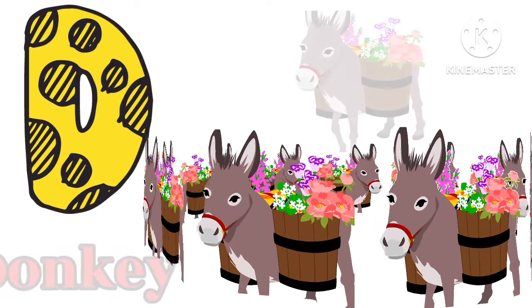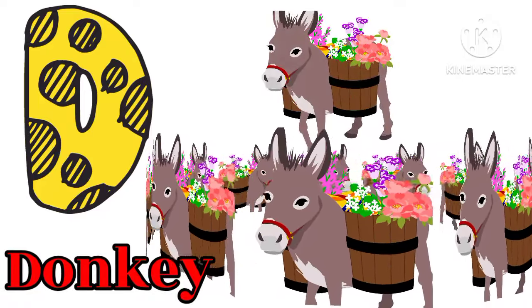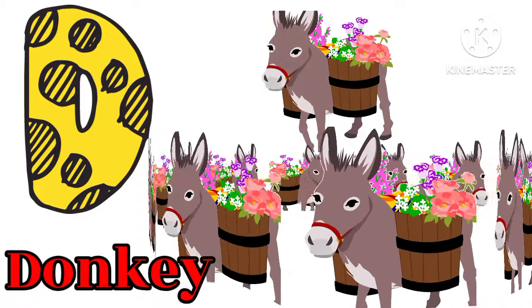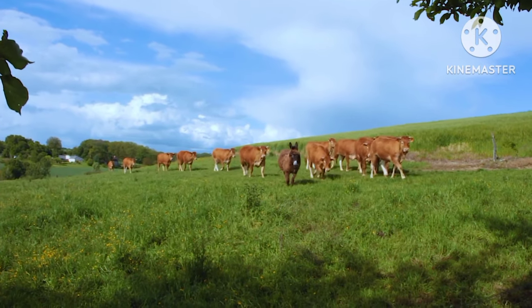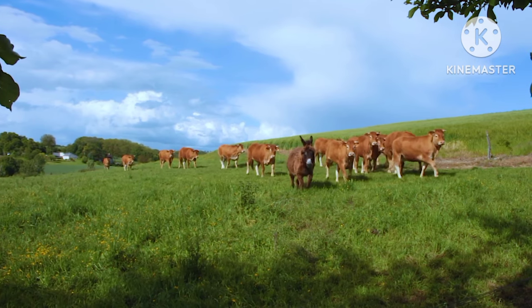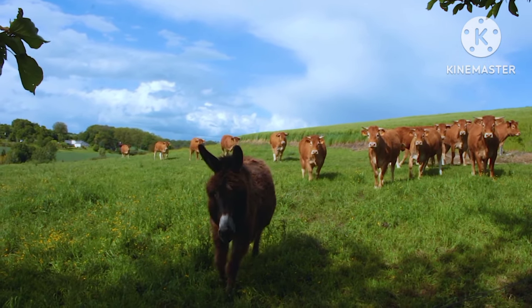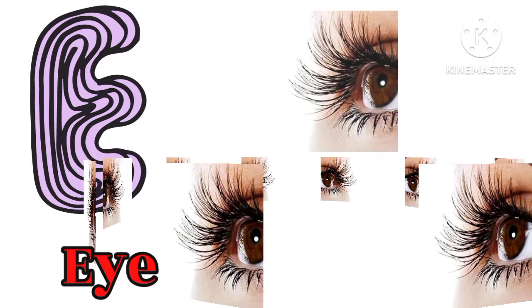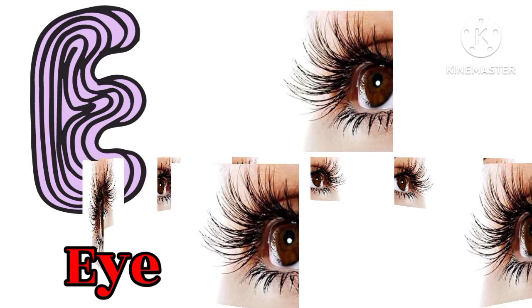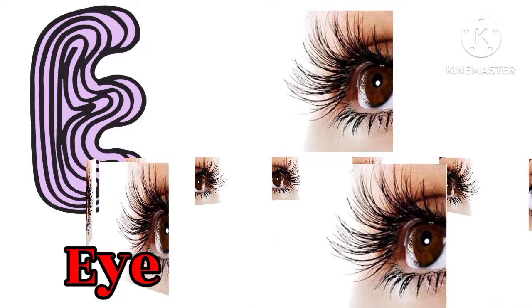D for Donkey — Donkey means Gada. E for Eagle — Eagle means Ark.